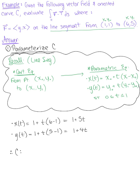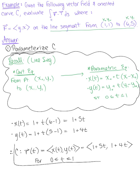So the parametric equation for our curve, our line segment here, is represented by the vector-valued function r(t) = ⟨x(t), y(t)⟩, where x is 1 plus 5t, y is 1 plus 4t, and this is for 0 ≤ t ≤ 1.